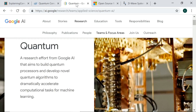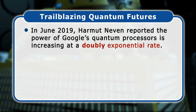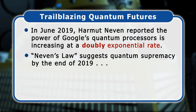Google is also developing quantum hardware and software, and in June 2019 Hartmut Neven, the director of its quantum artificial intelligence lab, reported that the power of Google's quantum processors is now increasing at a doubly exponential rate. This has already been termed Neven's Law and suggests that we may reach the point of quantum supremacy — where a quantum computer can outperform any classical computer — by the end of 2019.